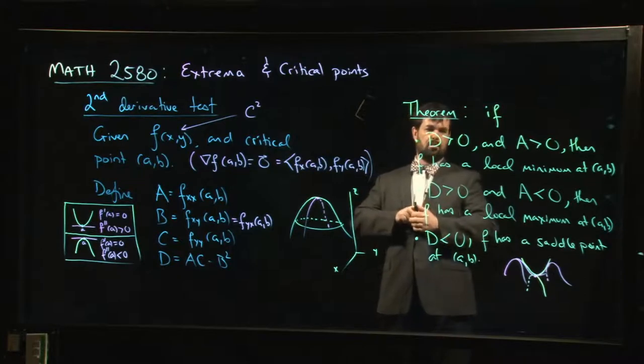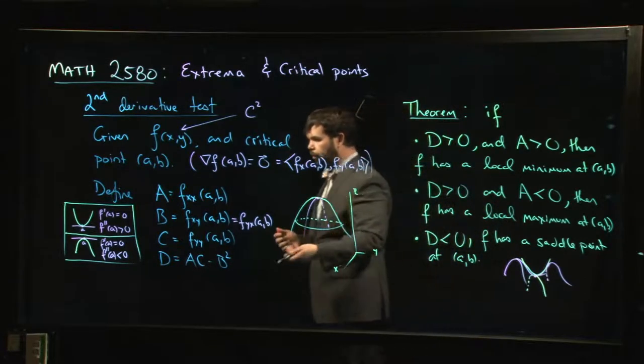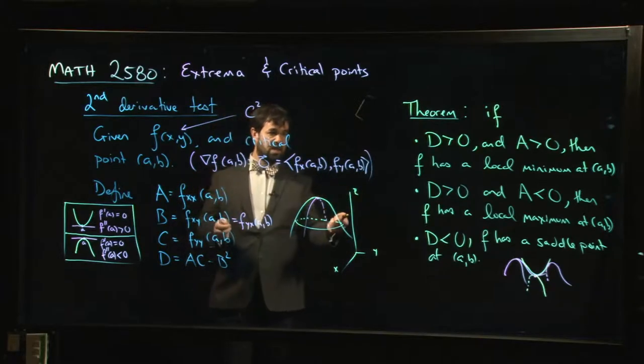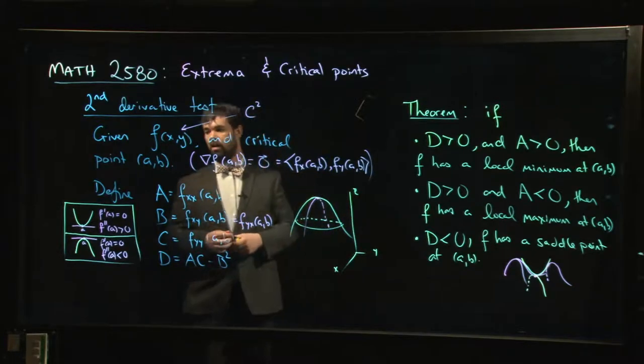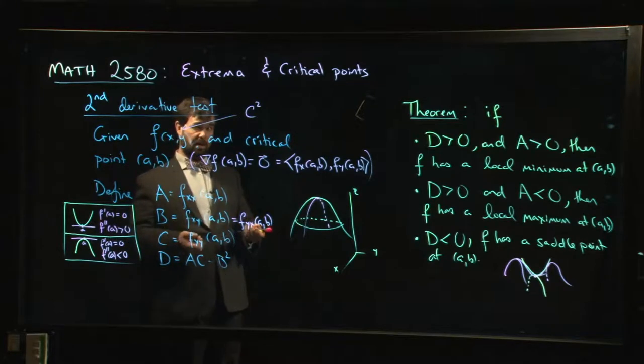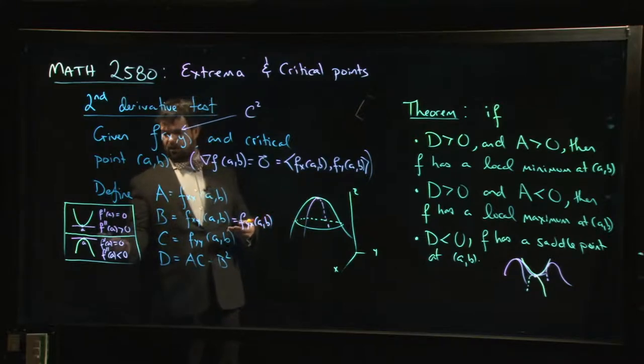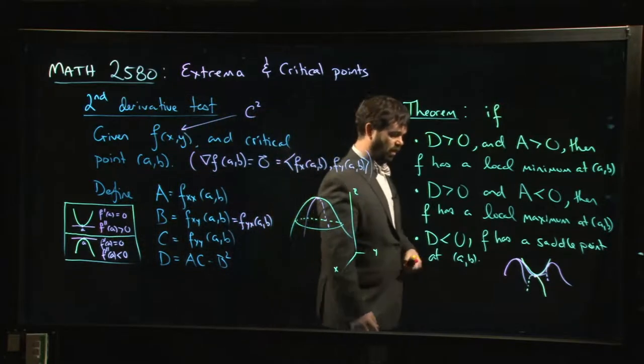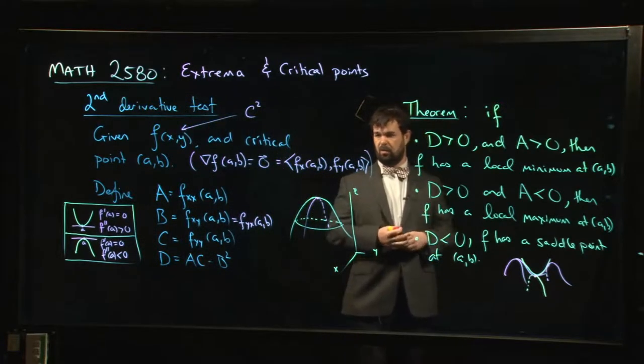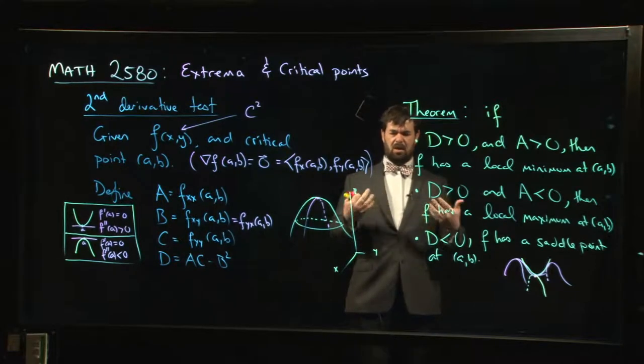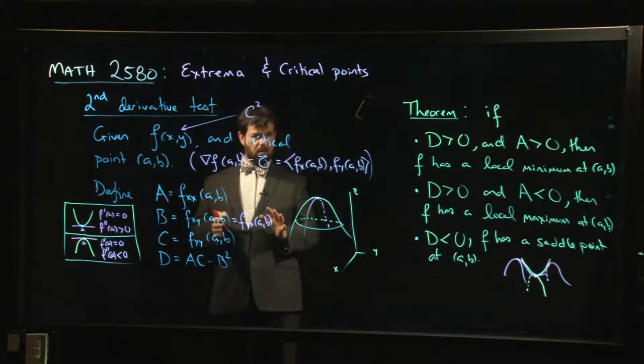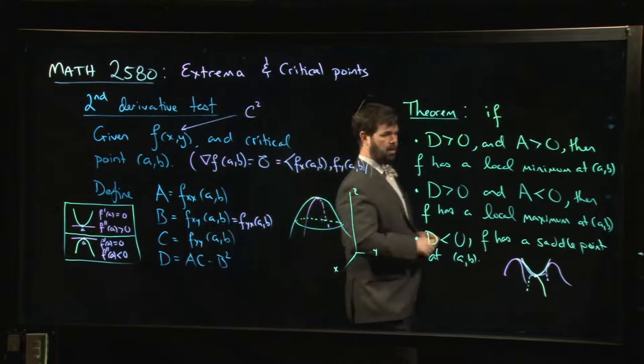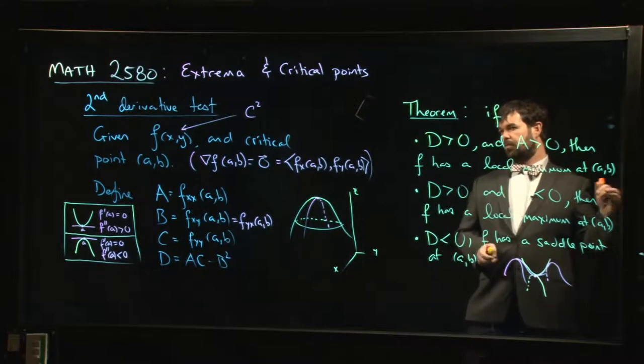And the other one, I won't even bother writing it down. The fourth possibility is that this value D is zero. And if D is zero, the second derivative test fails, just like in one variable, if f double prime is zero, the second derivative test fails in that case as well. And it's kind of the same story. So if f double prime is zero in one variable or if this D is zero in two variables, these are what are called degenerate critical points. They're ones where things aren't quite sort of the normal situation and you have to treat them with a little bit more caution to understand what's going on.